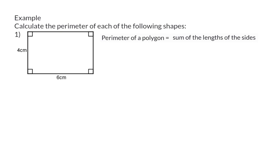In this first example we have a rectangle, that means we need to add up four side lengths. So we have four centimeters and six centimeters, another four centimeters, and finally another six centimeters.